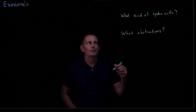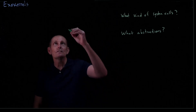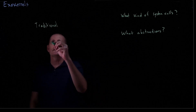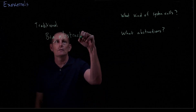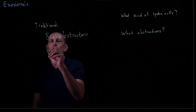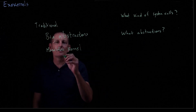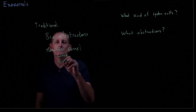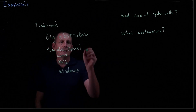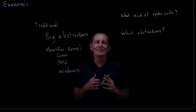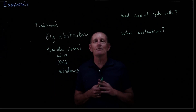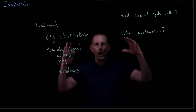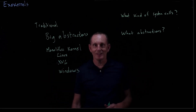A monolithic kernel is one possibility — this is the traditional approach. The idea is we have large abstractions and a monolithic kernel. Examples include Linux, XV6, and Windows. In the monolithic kernel, all of the behavior that the operating system provides is sitting inside this protected kernel — it's one big collection of code.